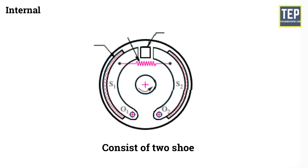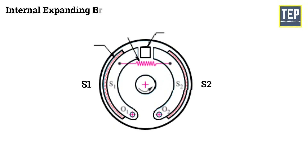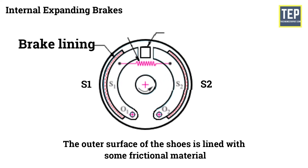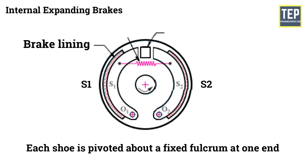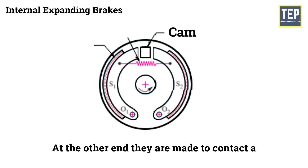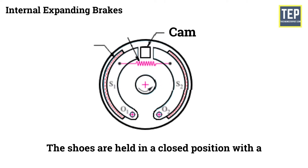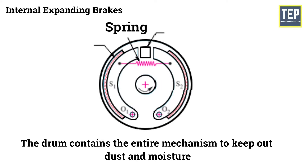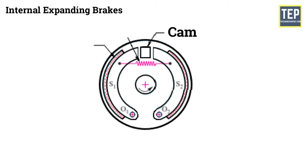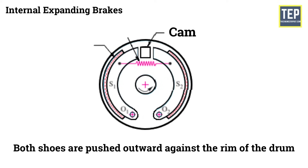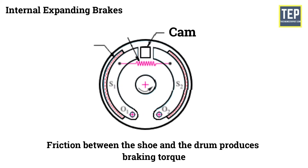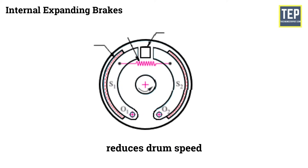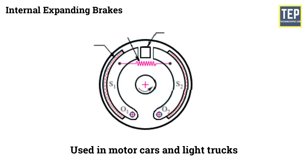This type of brake consists of two shoes, S1 and S2. The outer surface of the shoes is lined with some frictional material. Each shoe is pivoted about a fixed fulcrum at one end, and at the other end they are made to contact a cam. The shoes are held in a closed position with a spring. The drum contains the entire mechanism to keep out dust and moisture. When the cam rotates, both shoes are pushed outward against the rim of the drum. Friction between the shoe and the drum produces braking torque and therefore reduces drum speed. Such brakes are generally used in motor cars and light trucks.